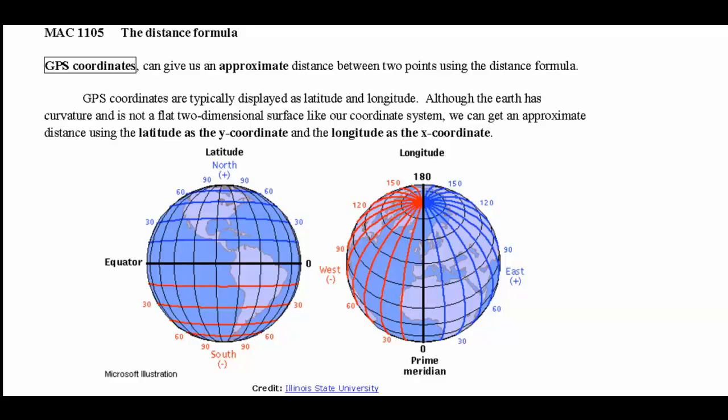The latitude is representing the y-coordinate, the longitude is representing the x-coordinate. This is a pictorial representation of latitude. The blue bands are above the equator, the red bands are below, and take note that above the equator are positive values, below the equator are negative values.